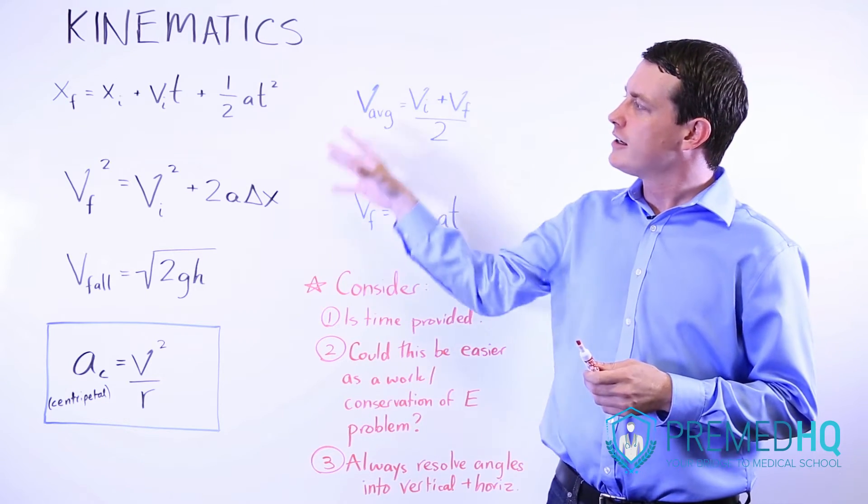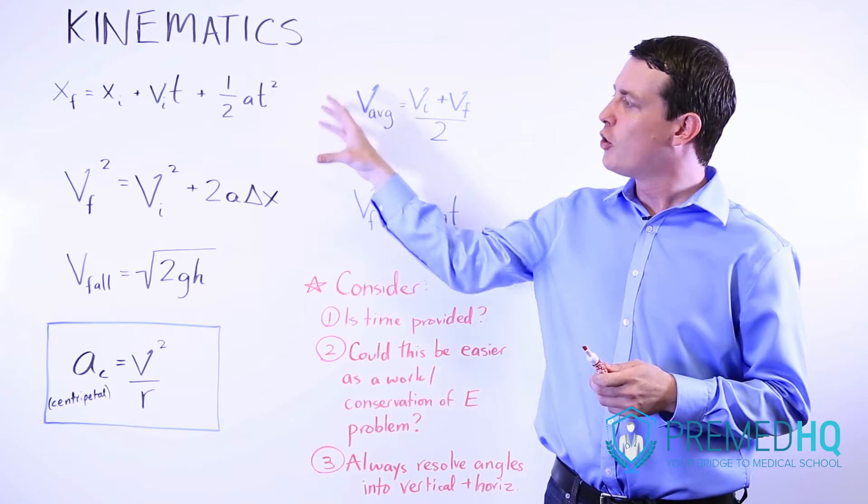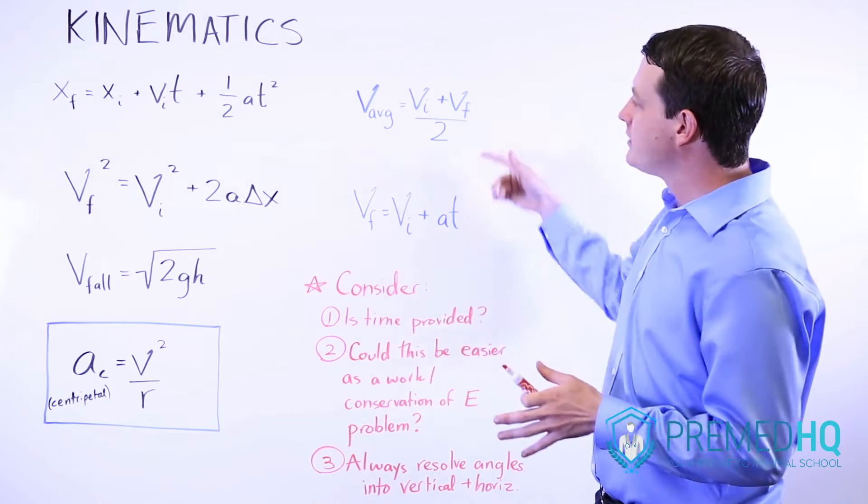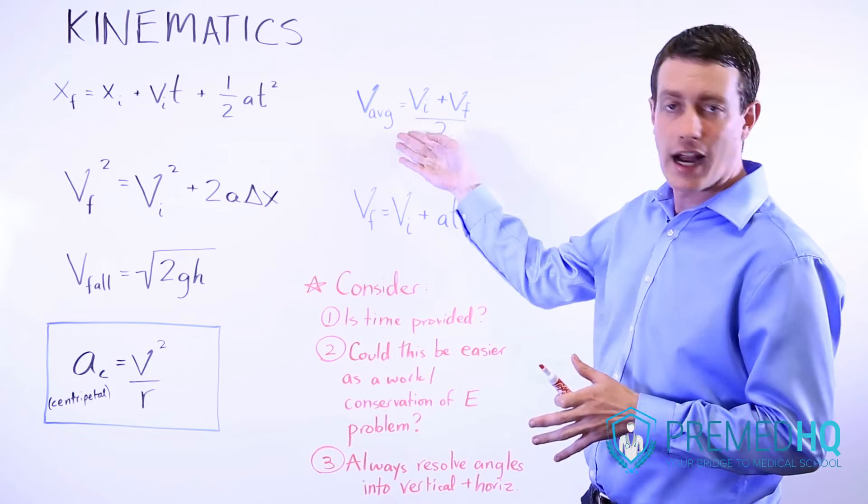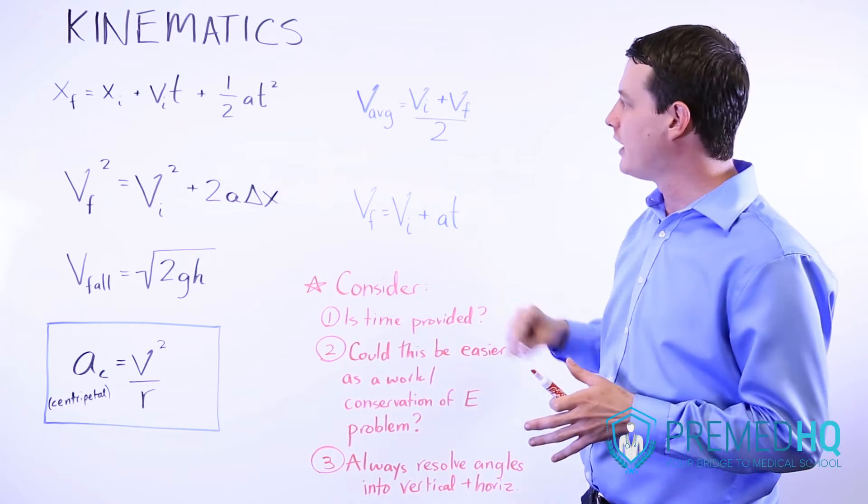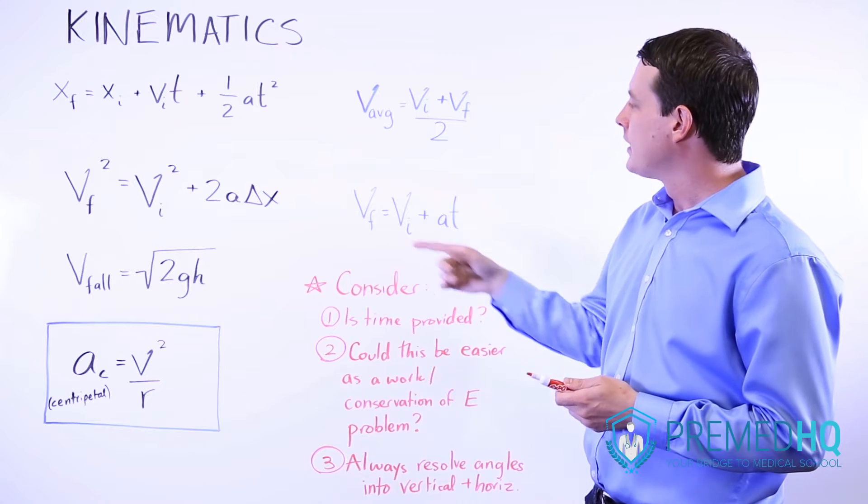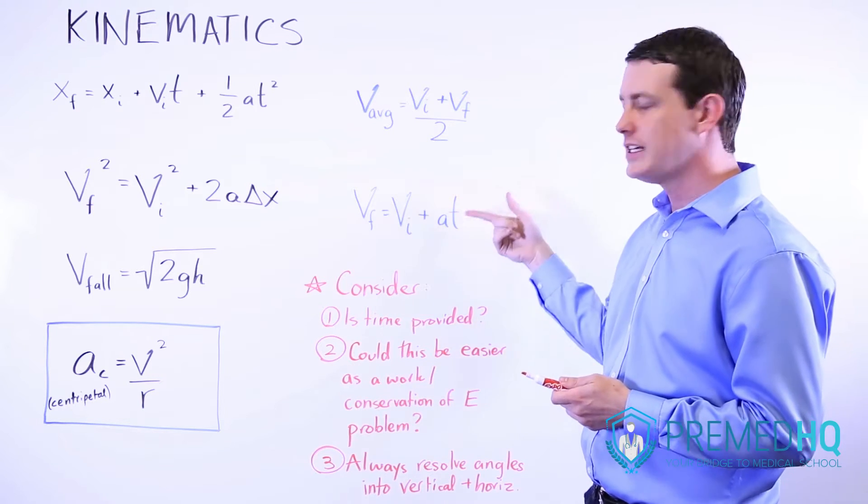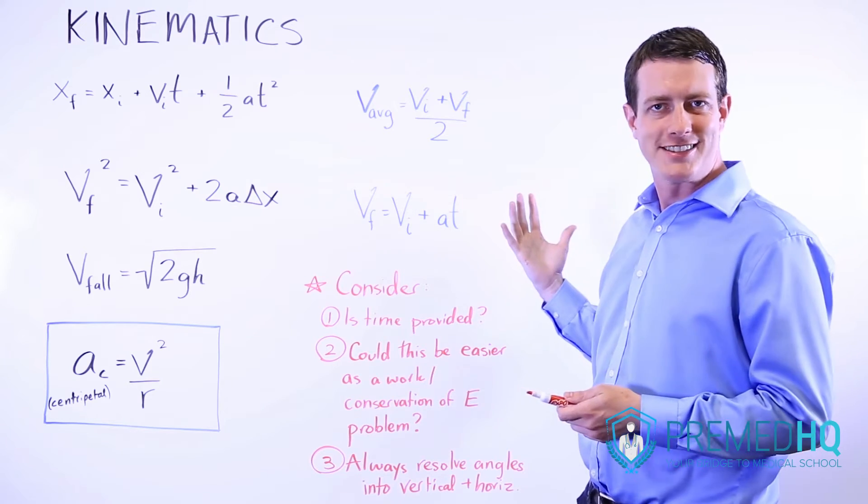The ones in black are really core kinematics equations that aren't absolutely intuitive. These two are more straightforward. The average is simply adding the two values and dividing by two. The final velocity is found by looking at the initial velocity and adding acceleration times time.